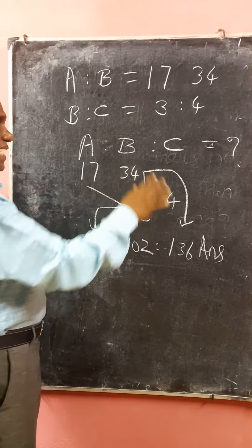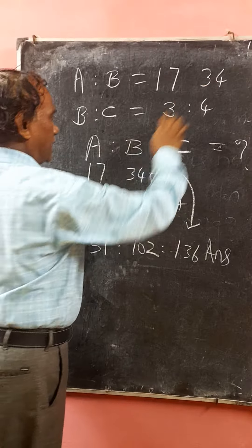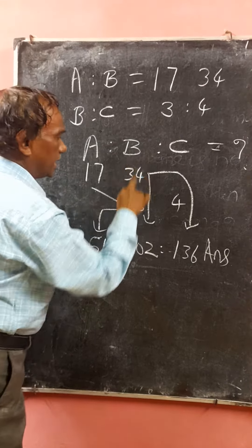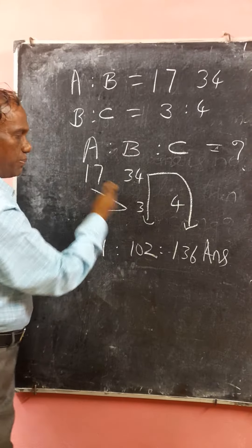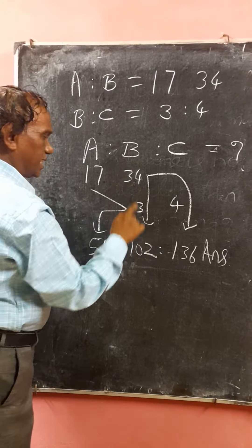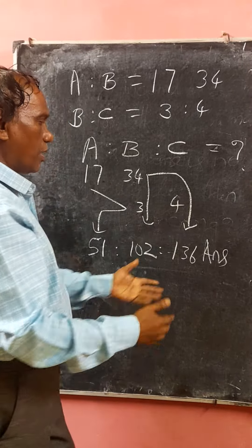This is the answer. I repeat: write 17 here, 34 here, 3 just below the B here, C here. Just multiply this and this, multiply this and this, multiply this and this. Answer it.